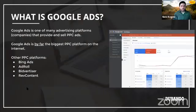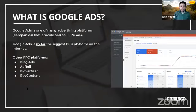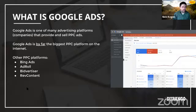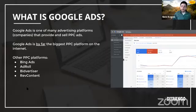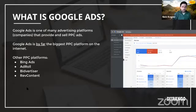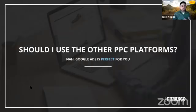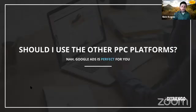The biggest program used for running PPC ads is by far Google Ads. Other PPC platforms like Bing Ads, AdRoll, Advertiser, and RevContent exist, but they're done almost on top of Google Ads in most cases. As your business scales to a national level, you might look at those other platforms. But if you're a small business in Durango selling goods and services in a localized area — brick and mortar or online — Google Ads is going to be perfect for you.